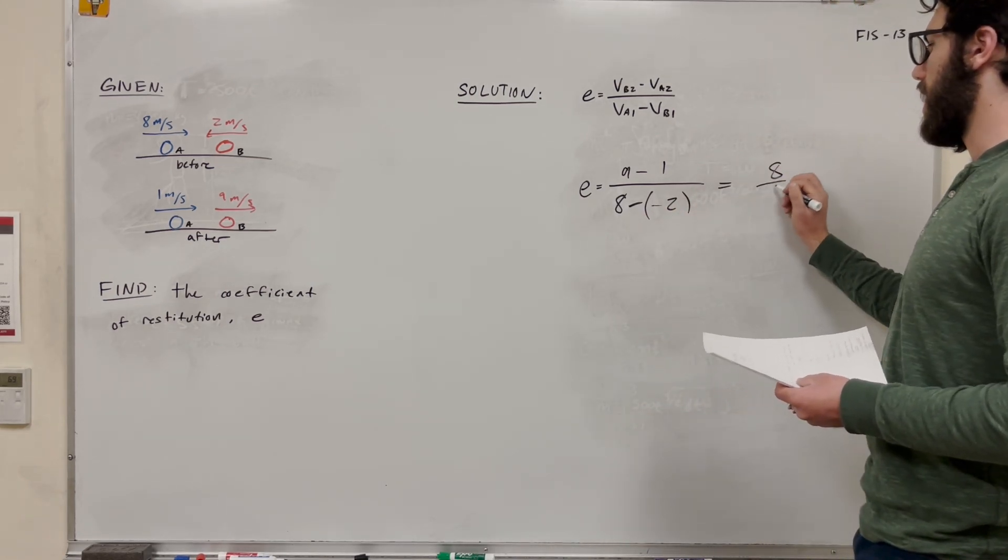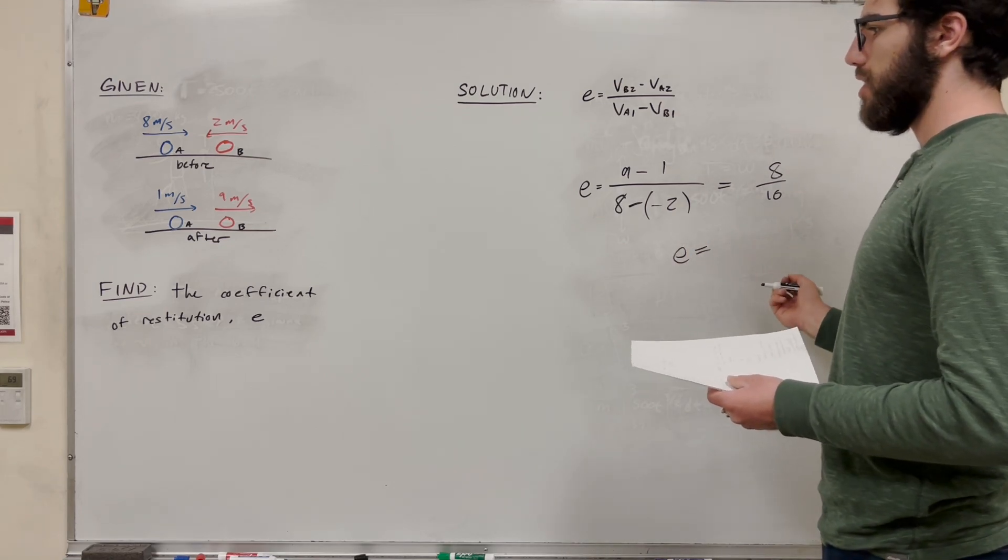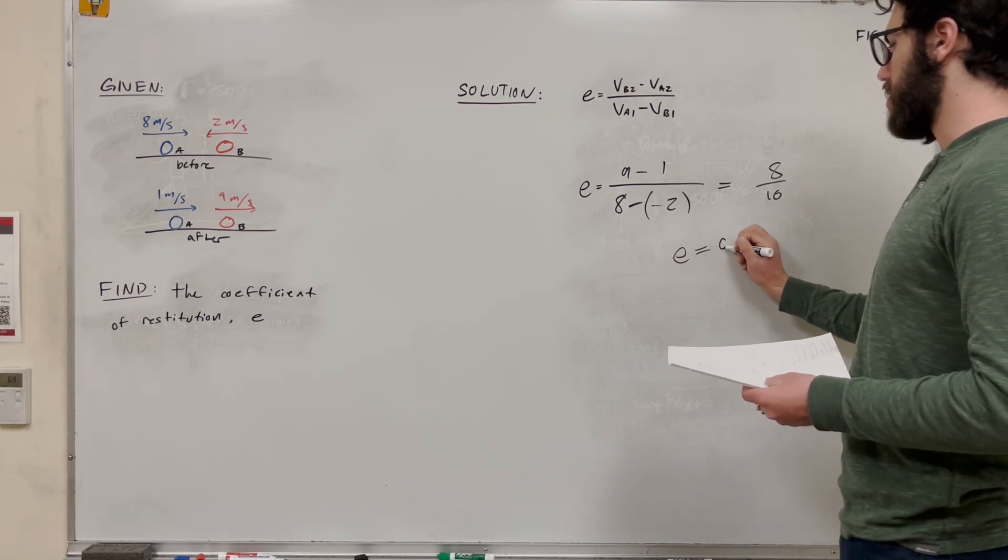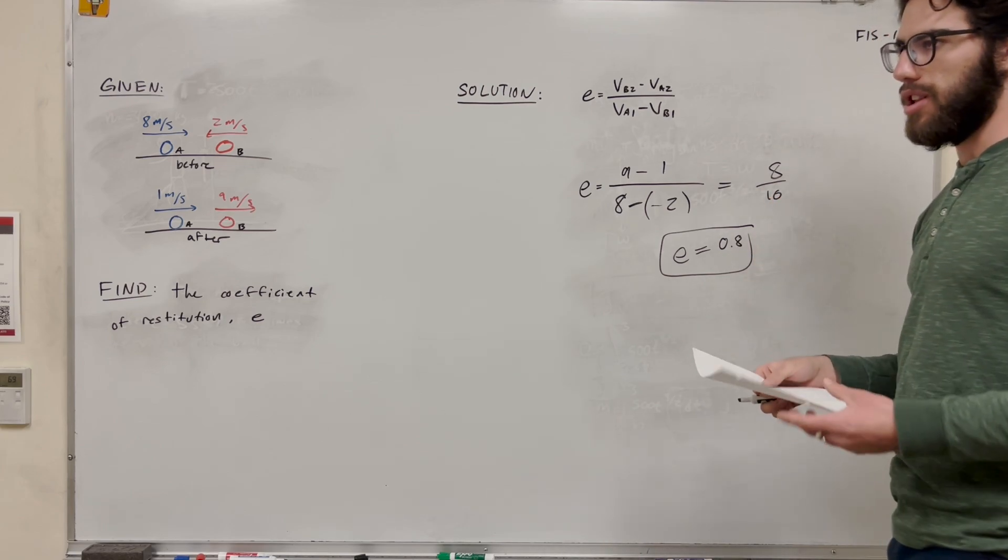So this is going to give you 8 over 10. So that tells you that the coefficient of restitution is 0.8. That's your solution to the problem.